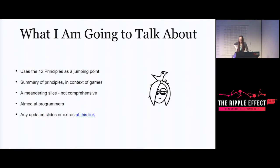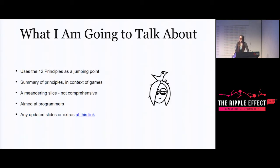Just a little overview: I'm going to be using these 12 principles as a jumping-off point to talk about a bunch of things. I'll be generally summarizing them, but most of the content is little things I've learned along the way - a bit of a grab bag, going on a wander through some thoughts about animation in games. This talk is primarily aimed at programmers who understand general games programming and have made a game before, but maybe don't know a whole lot about animation.